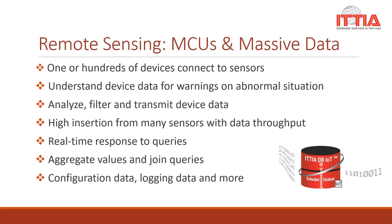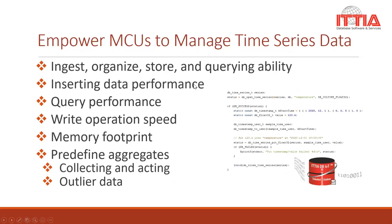Remote sensing is the acquisition of data about a trend without making physical contact with an object where there is no possibility for on-site observation. Devices deployed in the field are connected, working with sensors, and must remotely sense the environment and report events such as abnormalities in real-time. Data needs to be analyzed and filtered with high insertion data throughput — for example, running aggregate or join queries — everything must be done really fast, and this is the purpose of having a database that can meet these requirements.